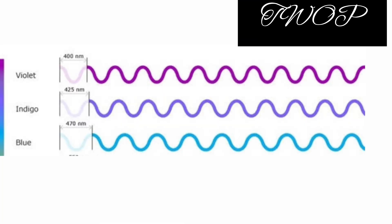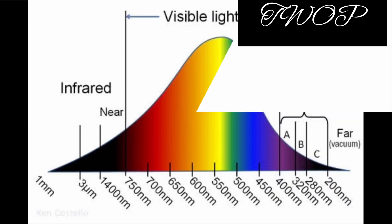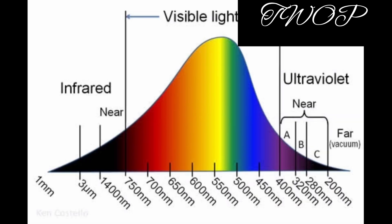Following that law, violet is the most scattered color, followed by indigo, then blue. The reason the color of the sky is neither violet nor indigo is because the amount of blue light and white light is more than indigo and violet. This graph shows the quantity of each color present in white light. Another thing is that our eyes are more sensitive to blue light.